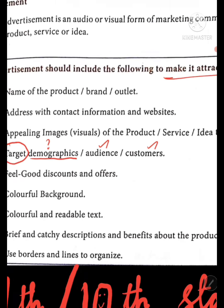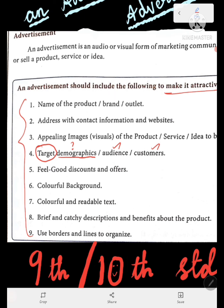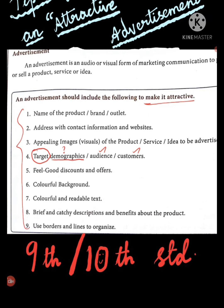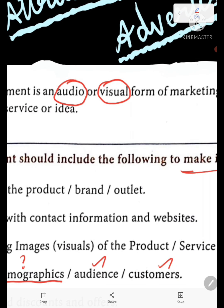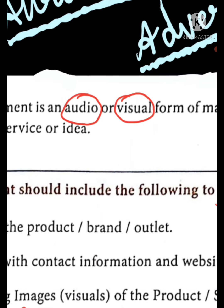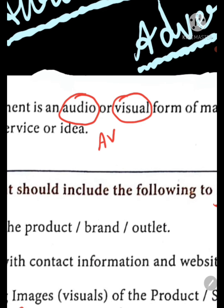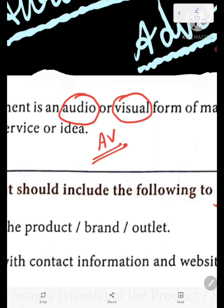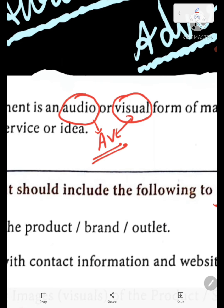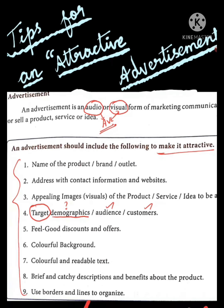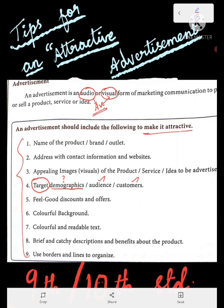You know what an audience and customers are. An advertisement is an audio or visual form. Audio means sound, visual means what you see. Audio-visual means both — that is what we see in video advertisements.